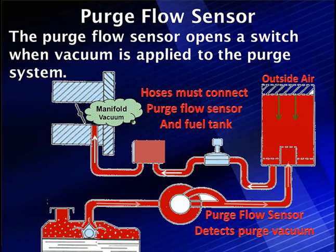In this particular case for GM, there's a purge flow sensor. It opens a switch when vacuum is applied to the purge system, indicating we have purge. That's the extent of the diagnostics — is there a purge? Yes or no? Only major leaks, restrictions, and disconnected hoses can set this. There is no fuel cap monitor because it's not there.